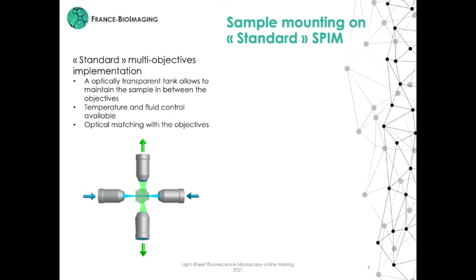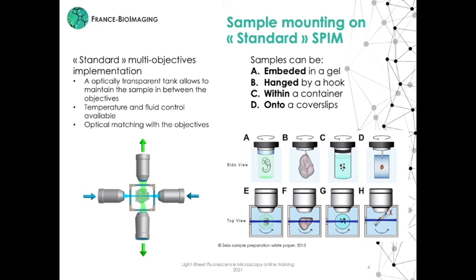Here the sample is located in a transparent cuvette, typically filled with an aqueous medium. It usually allows to control the temperature, CO2, and media inside this cuvette for live imaging. One can also adapt the refractive index of the imaging media inside the cuvette according to the sample preparations that have been made, typically for imaging cleared samples. In this geometry, the samples can be either embedded in a gel, hooked by a hook, placed within a container, or fixed to a cover slip held vertically. The sample mounting should enable rotations around the vertical axis in order to image from several directions. Several stacks are typically acquired and then fused to reduce shadowing effects, improve spatial resolution, and increase the overall field of view.